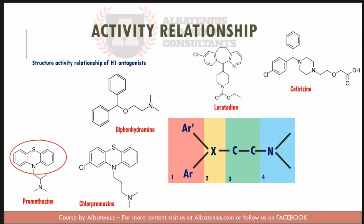Let's start with Group 1 — the Ar group, which is at the bottom. It includes phenyl or heteroaryl groups. Ar prime is Ar or an Ar-methyl group. Sometimes the two groups will be bridged — for example, in promethazine. If you look at promethazine, you will see that those two aromatic groups are bridged together.